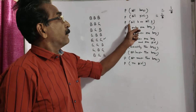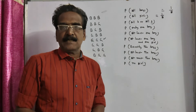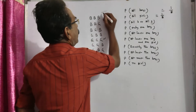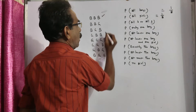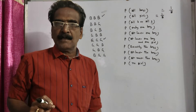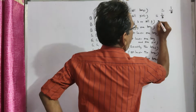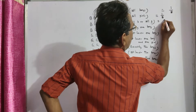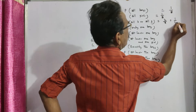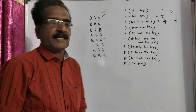Then, probability of all boys or all girls. We have two favorable outcomes — all boys and all girls. So the probability of all boys or all girls is two by eight, that is equal to one by four is the required probability.